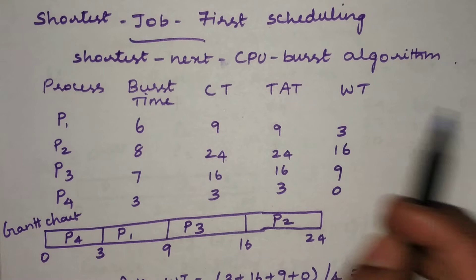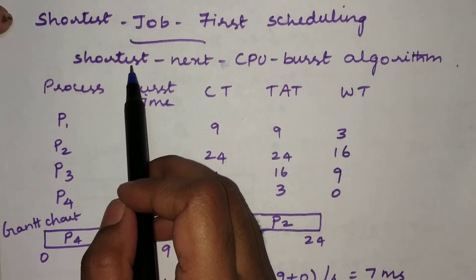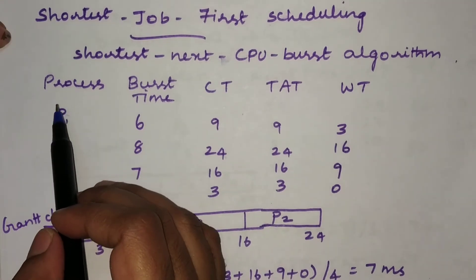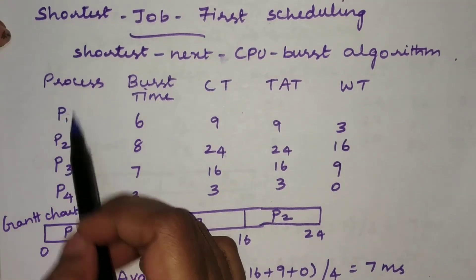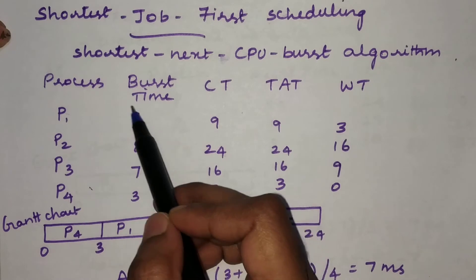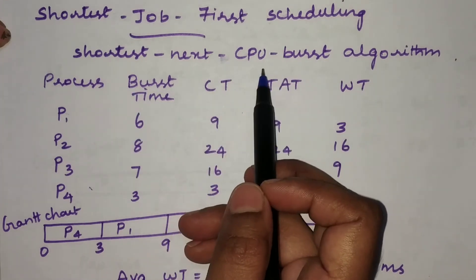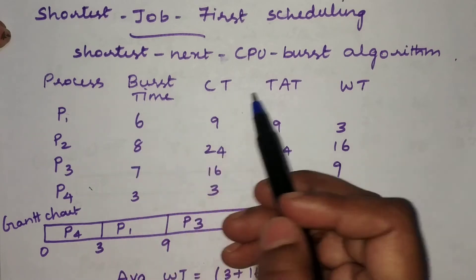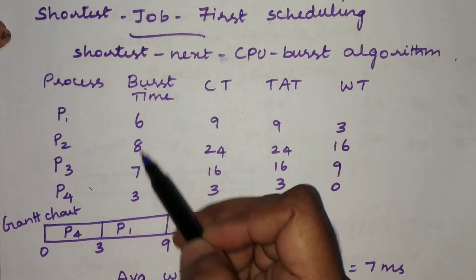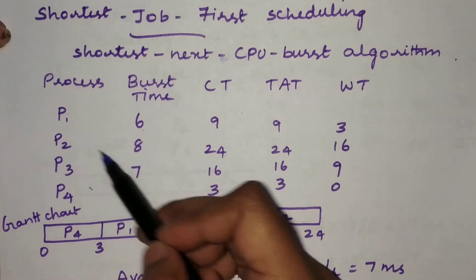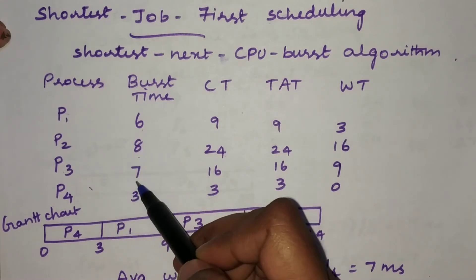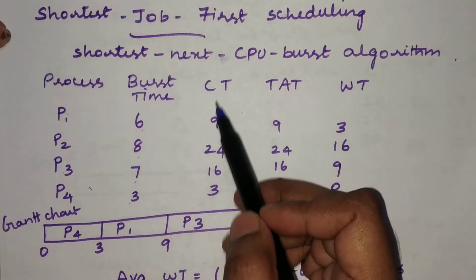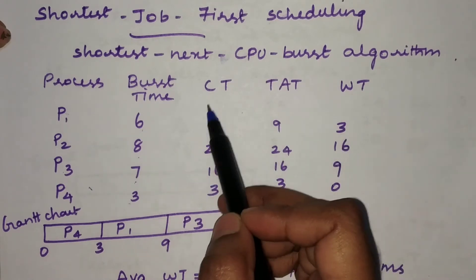It is also termed as the Shortest Next CPU Burst algorithm. In this example, we have four processes. All processes arrive at the same time, which is time zero. The burst times are: P1 = 6, P2 = 8, P3 = 7, and P4 = 3. We need to find the completion time, turnaround time, and waiting time.